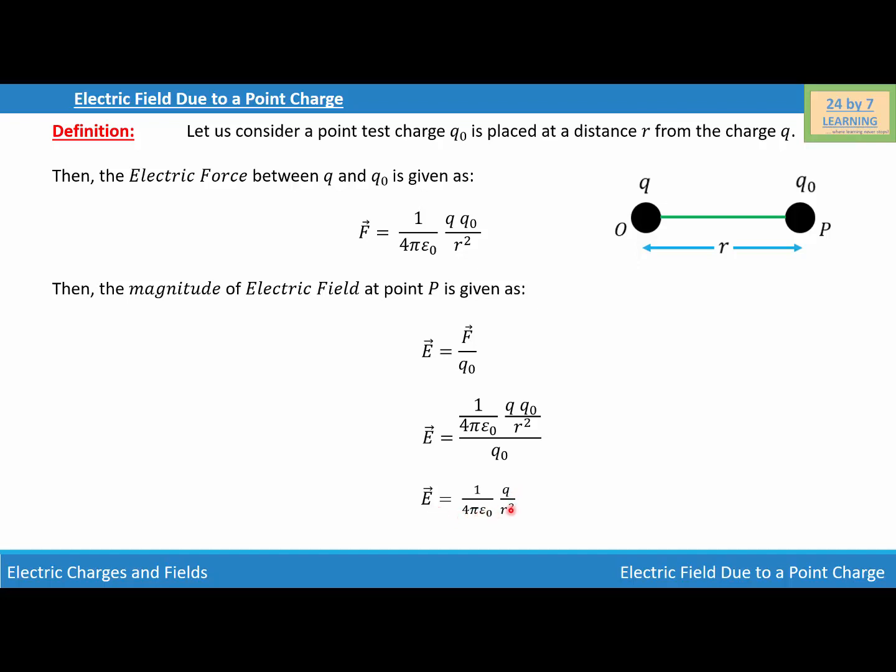This is the magnitude of the electric field at point P which is R distance from charge Q. This is how we find the electric field due to a point charge.